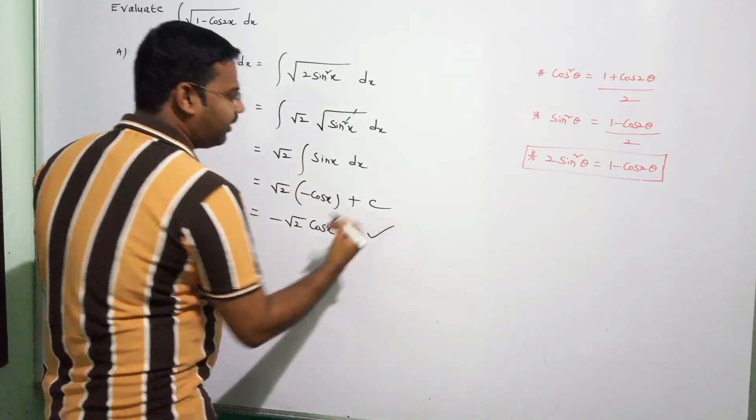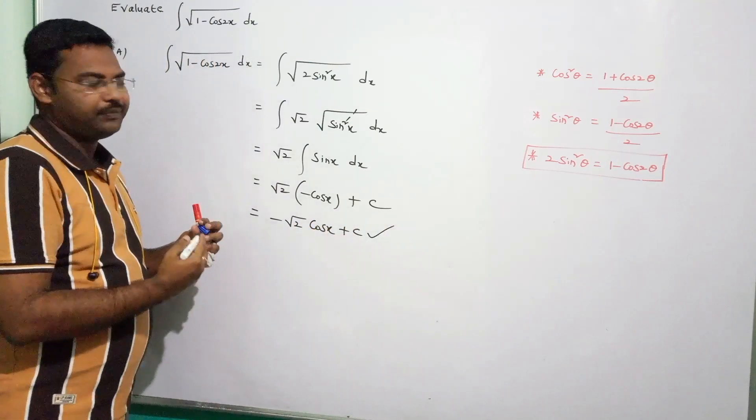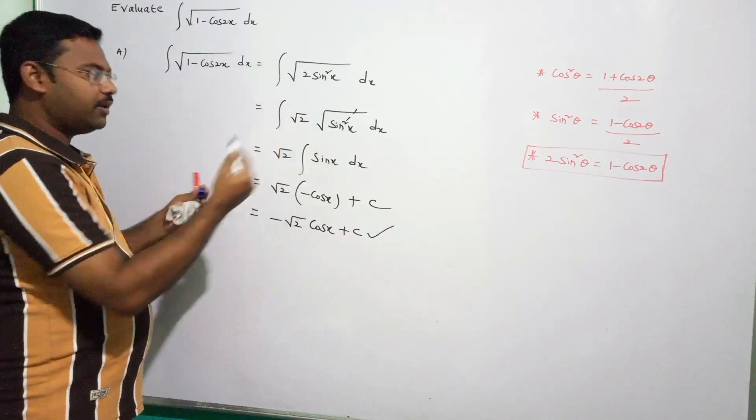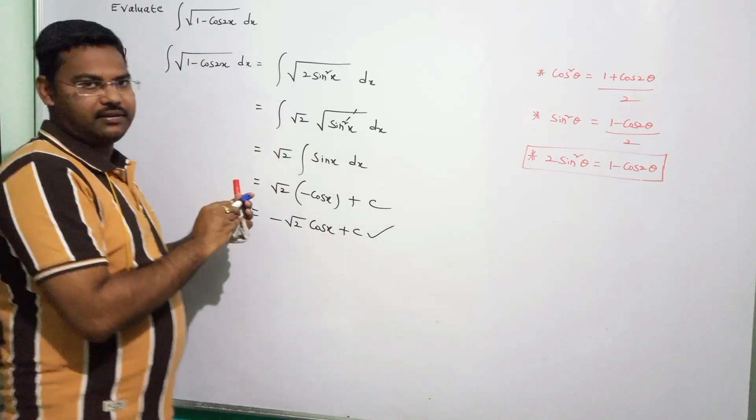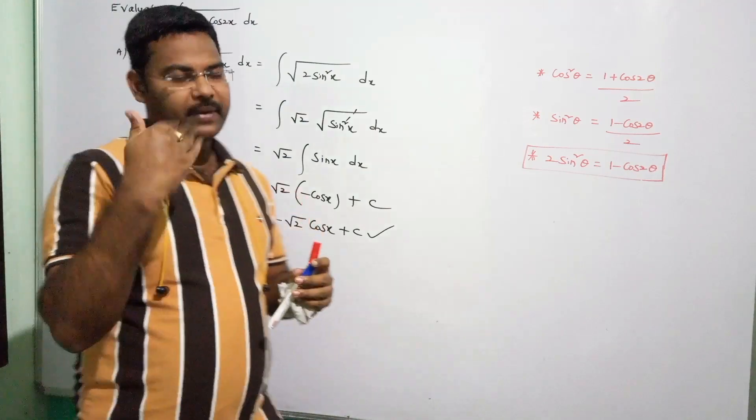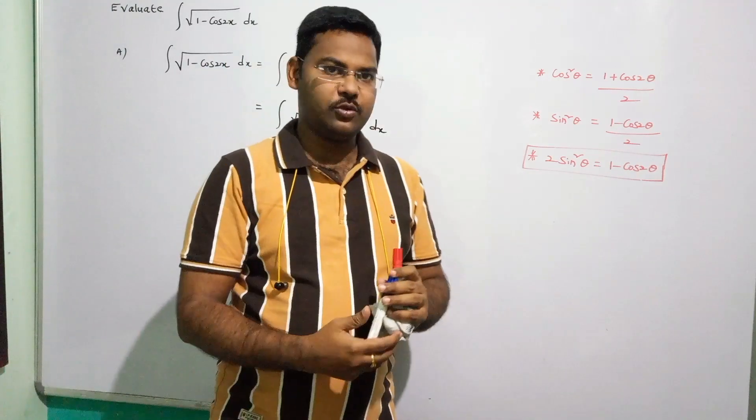So the final answer is −√2·cosx + c. This formula is now known — easy to remember.